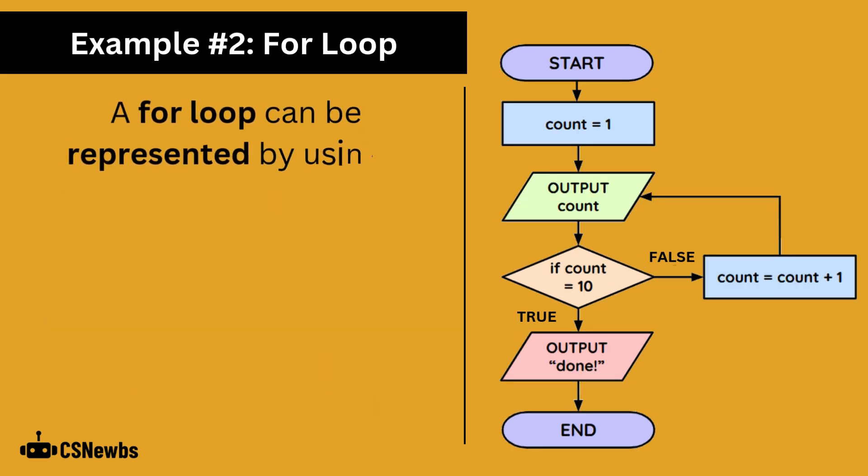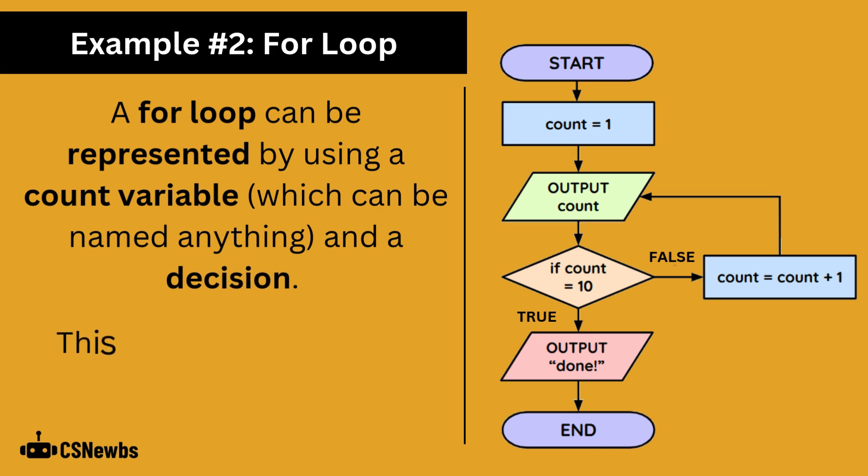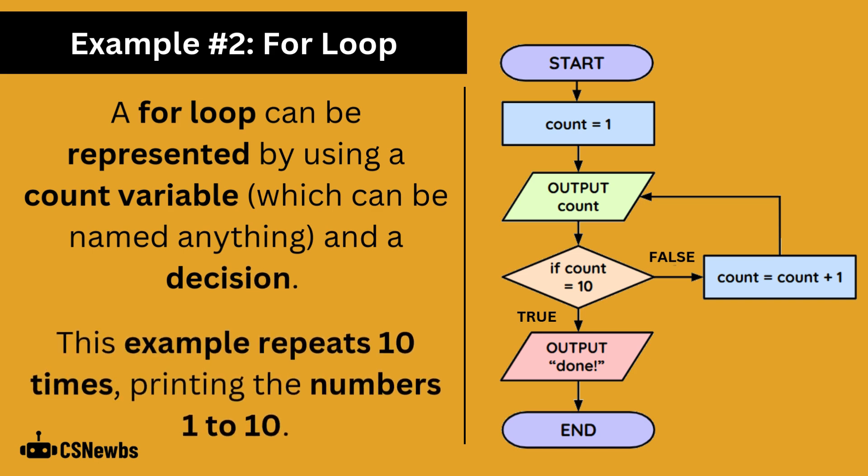A for loop can be represented by using a count variable, which can be named anything, and a decision. This example repeats ten times, printing the numbers one to ten.